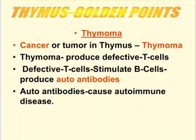Now in the golden point, we will discuss some defective functions of the thymus. If cancer or tumor occurs in the thymus gland, it is called thymoma — any word ending in 'MA' such as thymoma or leukemia indicates cancer. Cancer of the thymus gland is called thymoma. The thymoma produces defective T-cells, and such defective T-cells stimulate B-lymphocytes to produce autoantibodies. While normal antibodies attack foreign pathogens, autoantibodies attack and destroy our own body's self-particles, causing autoimmune diseases.